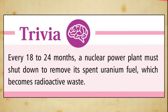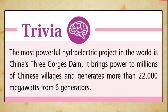Trivia: Every 18 to 24 months, a nuclear power plant must shut down to remove its spent uranium fuel, which becomes radioactive waste. Trivia: The most powerful hydroelectric project in the world is China's Three Gorges Dam. It brings power to millions of Chinese villages and generates more than 22,000 megawatts from six generators.